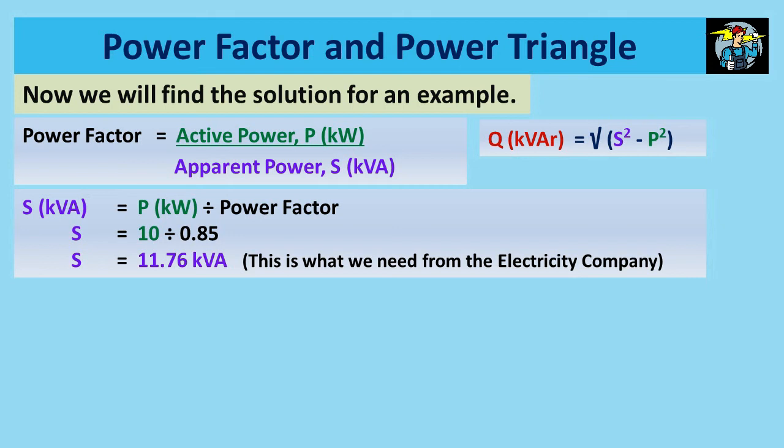P is the value given on the motor nameplate with kW, and the power factor too is given on the nameplate. When 10 is divided by 0.85, we get 11.76 kVA for apparent power S. This 11.76 kVA is what we require from the electricity company to operate this 10 kW motor.